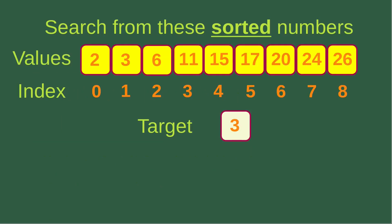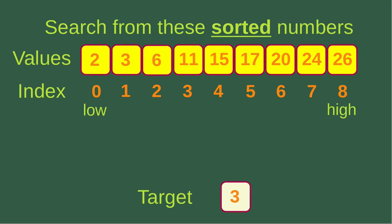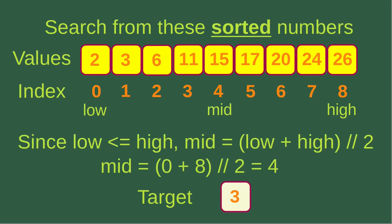So let us see an example. Suppose I want to search for target number three from these sorted numbers. Now I have nine numbers and their indices are shown. The first step is to indicate the low index and the high index. The low index is on the far left-hand side of the array, while the high index is on the far right-hand side of the array.